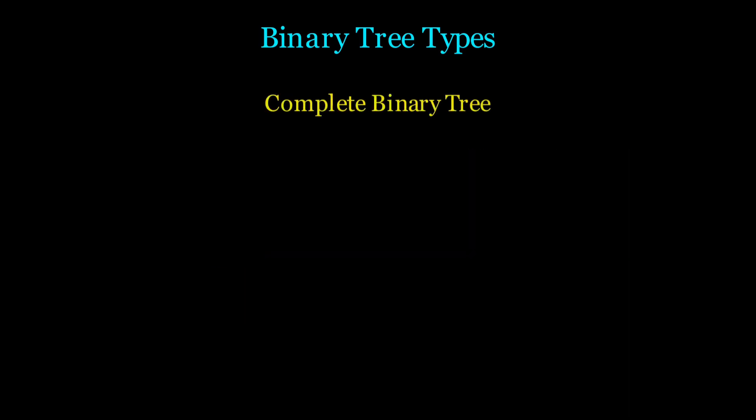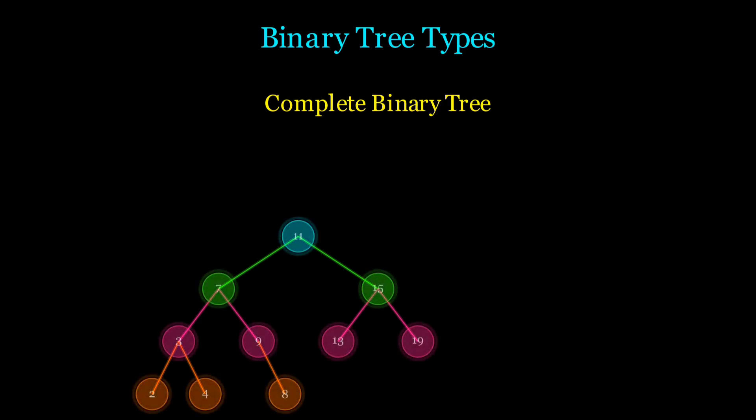Next, we have the complete binary tree. In this type, all levels are fully filled except possibly the last level, which is filled from left to right.